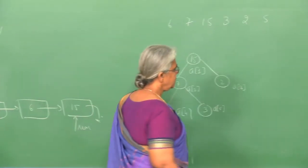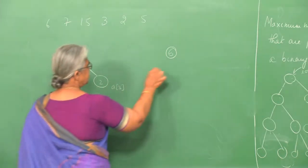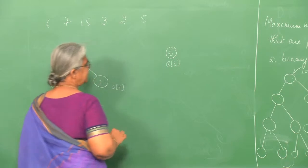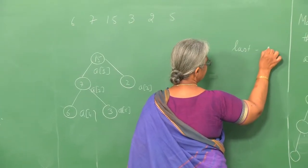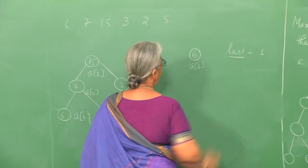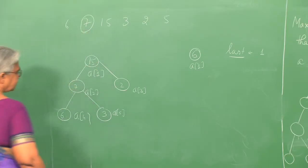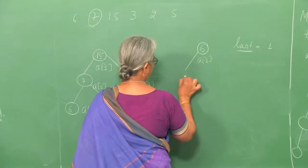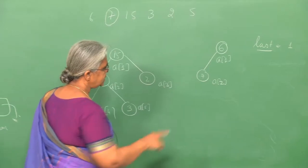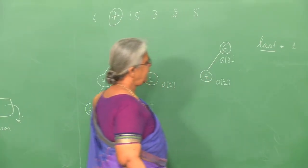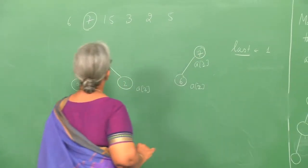Let us see how we insert these elements into the heap. Initially there is an empty heap. You create a node with the number 6, stored at a[1], and set variable 'last' to 1. Next, insert 7 at a[2] initially. Comparing 7 and 6, we find the heap property is violated, so we exchange them — 7 goes to the root and 6 goes below. Next, insert 15 at the next position, compare 15 and 7, find 15 is larger, and exchange them so 15 becomes the root.